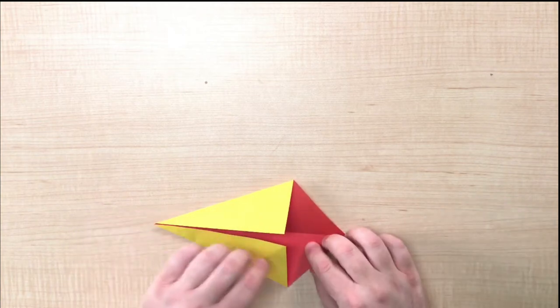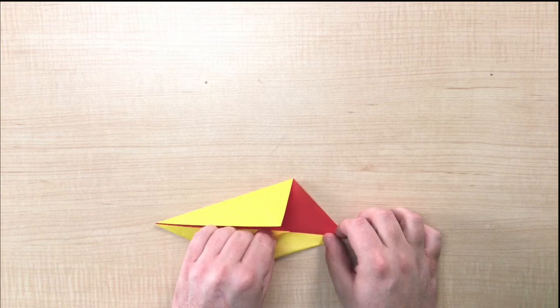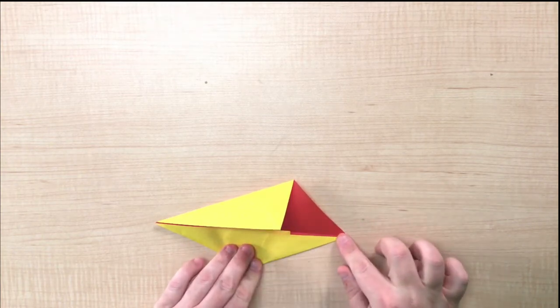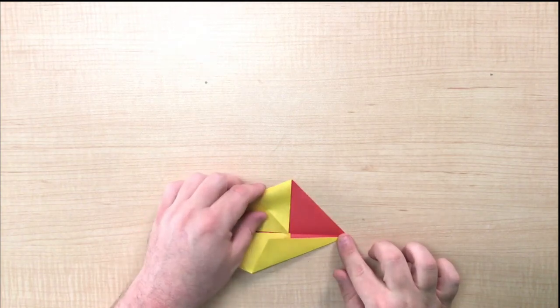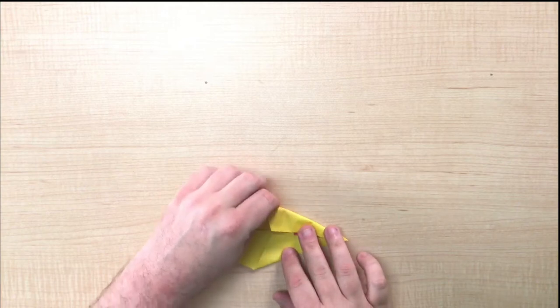Next, take the bottom point and fold it so that it touches the middle, but this time with the bottom right side. Repeat on top so that the top right side comes to the middle.